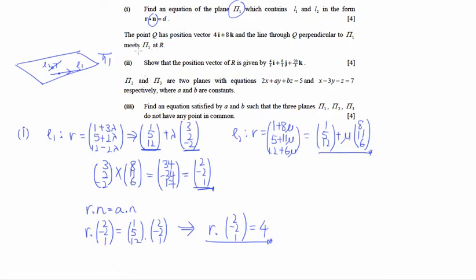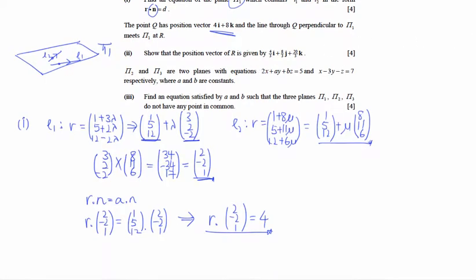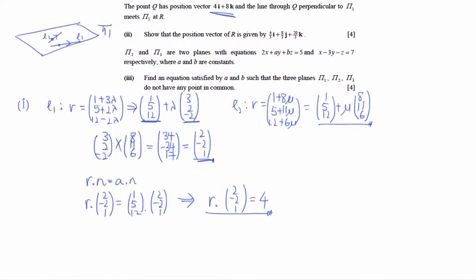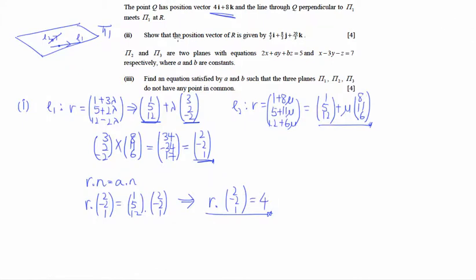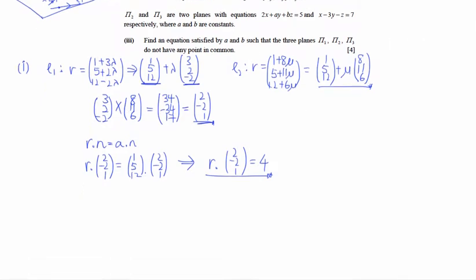Let's move on to part 2. There is a point Q with position vector (4, 0, 8), and the line through Q perpendicular to π1 meets π1 at point R. We need to find the position vector of R — this is simply the foot of the perpendicular. Let us illustrate this.